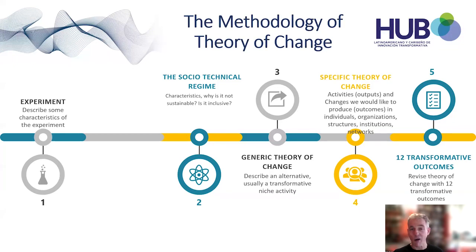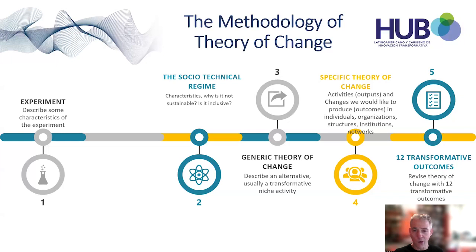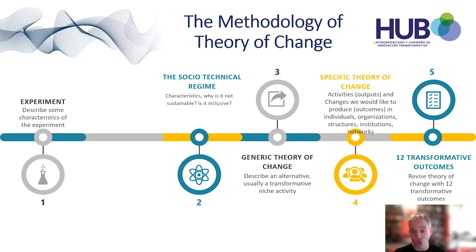When we think about theory of change and transformative innovation, we put on top of that theory of change a theory of transitions called the multilevel perspective. We use that theory to guide the way in which we actually implement this in practice. When we think about theories of change, we start thinking about what area we want to intervene in — which we call the experiment. What system are we thinking of? Are we thinking of a transport system, a food system, something regional or specific to one particular city, rural area?